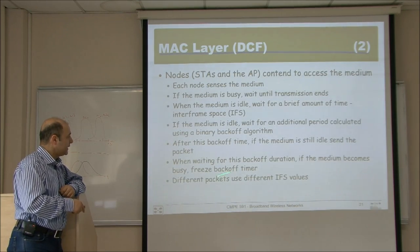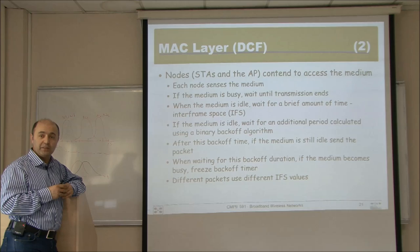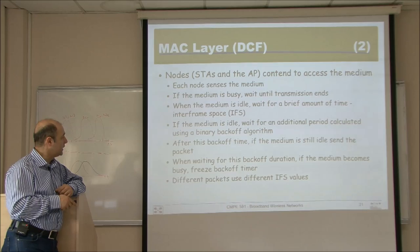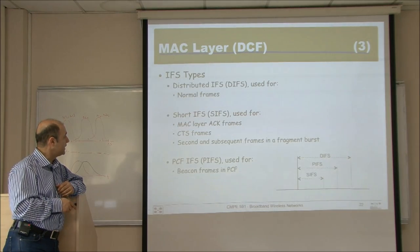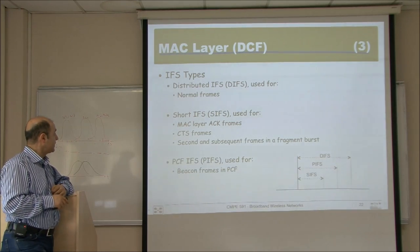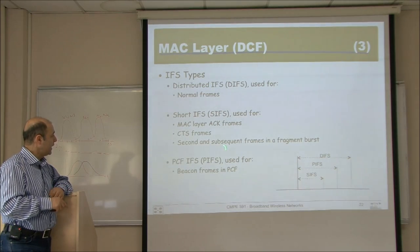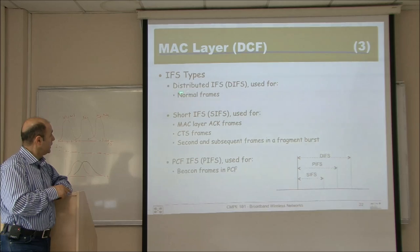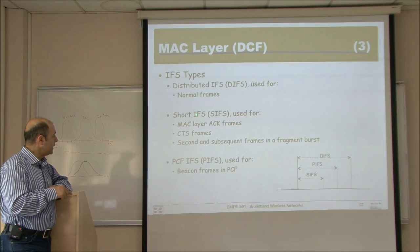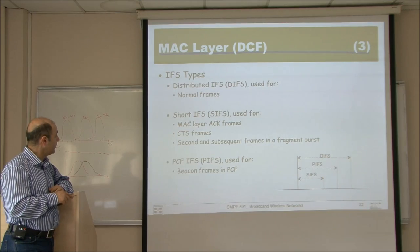Different packets use different IFS values — this defines priority between packet types. The interframe space types are: DIFS (distributed IFS), SIFS (short IFS), and PIFS (point coordination function IFS). DIFS is for normal data frames; SIFS is shorter and used for ACK frames, CTS packets, and subsequent frames in a fragment burst; PIFS is used for beacon frames.